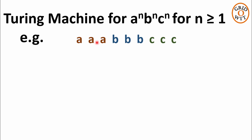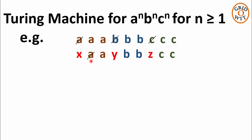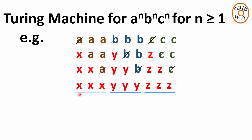Let us take an example. For n equal to 3 we have three a's followed by three b's followed by three c's. In the first iteration, the Turing machine will delete the leftmost a, and for that a it will delete the first b and first c — replacing a with x, b with y, and c with z. In the second iteration it replaces the second a, second b, and second c similarly. The Turing machine keeps doing this iteratively until all a's, b's, and c's are depleted. If this condition is satisfied, the Turing machine will accept the string.